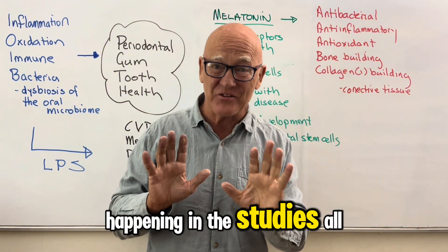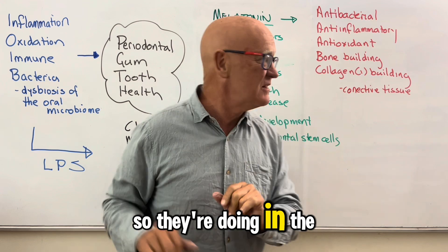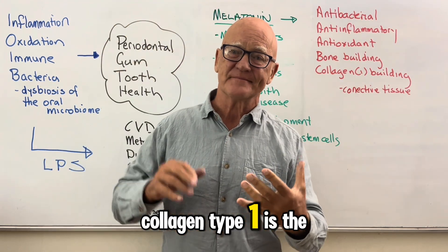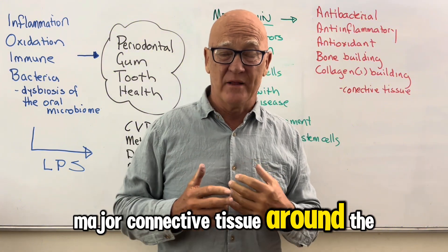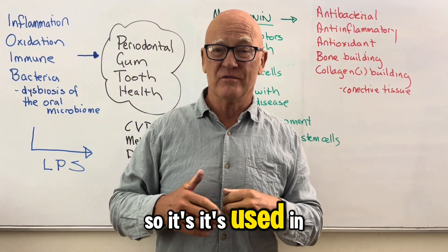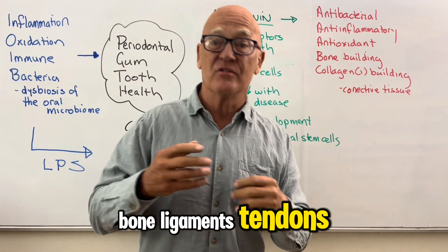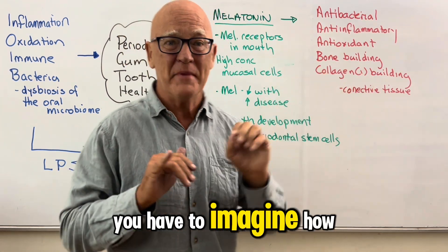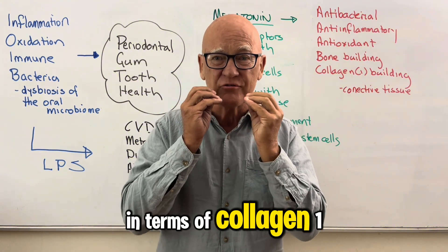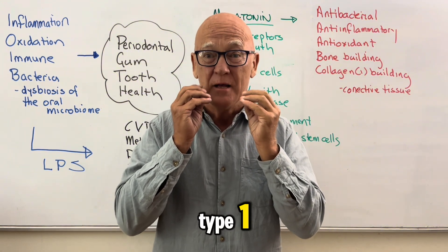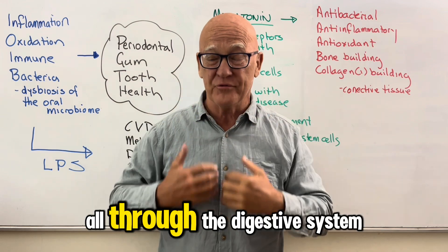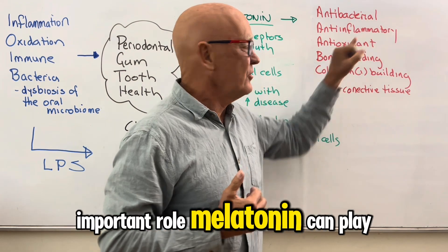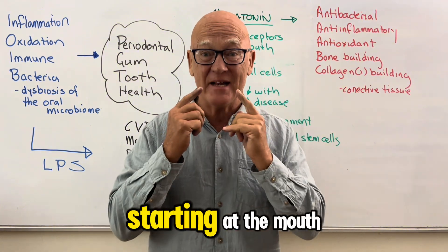Of course, melatonin is also collagen type 1 building. Collagen type 1 is the major connective tissue around the body — used in bone, ligaments, tendons, skin, hair, and all those things. You can imagine how much collagen type 1 is needed around the mouth because of the constant repair and replacement all through the digestive system. So you can see the important role melatonin can play in the whole digestive system, starting at the mouth.